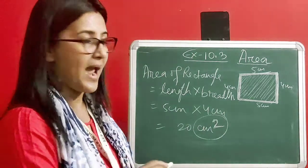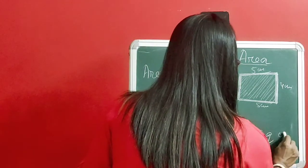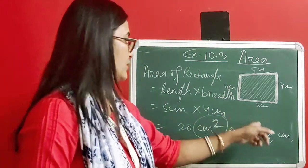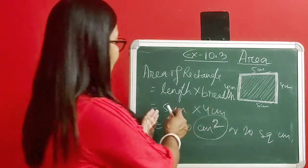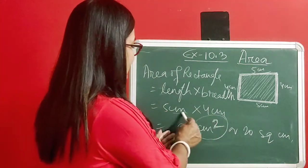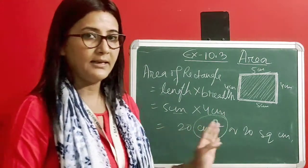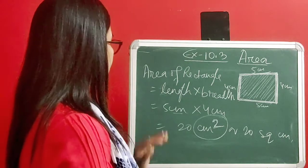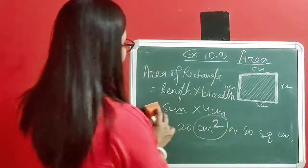One very important thing: the unit for area will always be in square units. You can write it as 20 cm squared or 20 square cm. Either notation is acceptable, but it is important to always express area in square units.